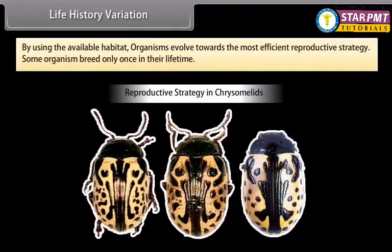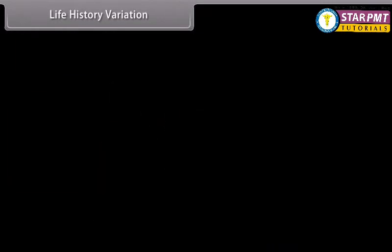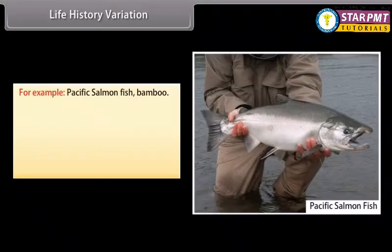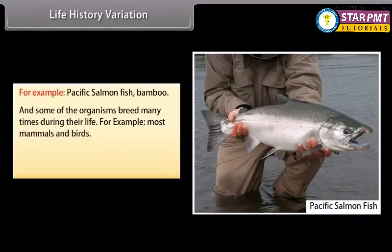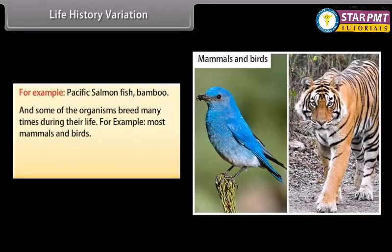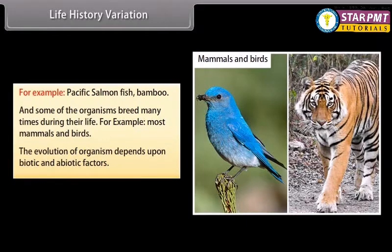By using the available habitat, organisms evolve towards the most efficient reproductive strategy. Some organisms breed only once in their lifetime — for example, Pacific salmon and bamboo. Some organisms breed many times during their life — for example, most mammals and birds. The evolution of an organism's life history depends on biotic and abiotic factors.